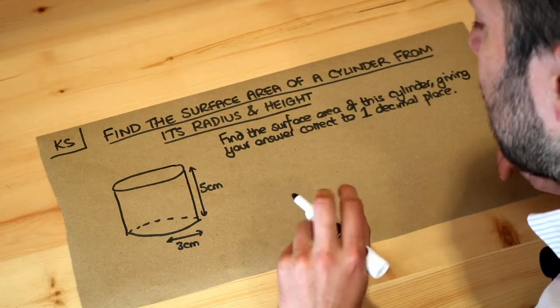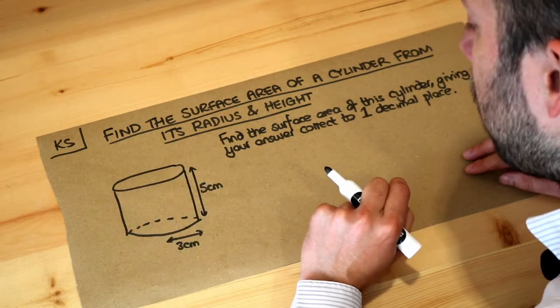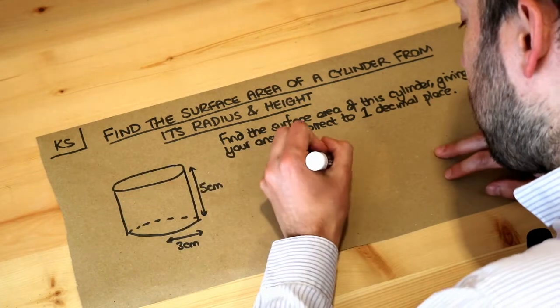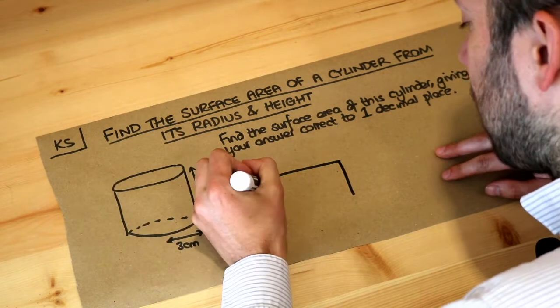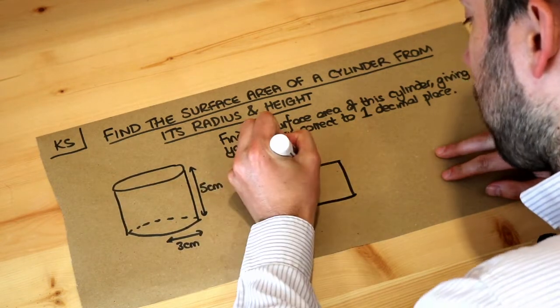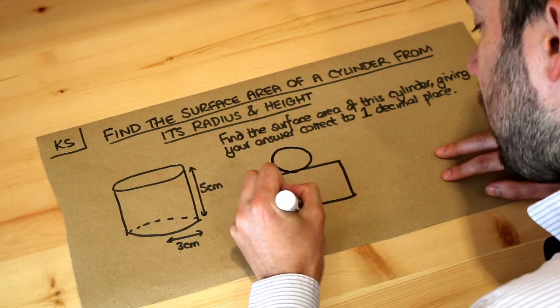One way you can think about it is that if you had the net of this 3D shape, so the net would look something like this if you were to cut the edges and then fold it out so it came flat, it would look like this.